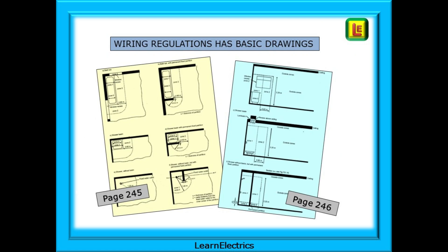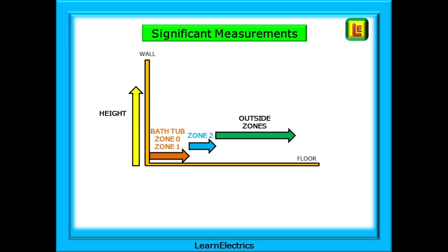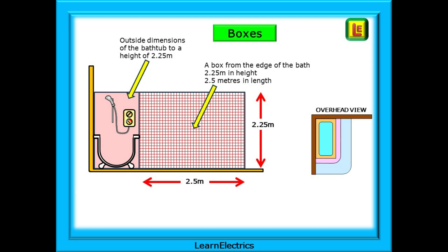The wiring regs have some basic drawings on pages 245 and 246 but they can still be confusing. We will show you in a little more detail the important parts you need to understand. The zones have particular dimensions for safety of the user. There is a height requirement common to all zones. Think of the inside of the bathroom as a set of boxes — there is a box surrounding the outside dimensions of the bath and another box that starts from the edge of the bath.